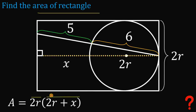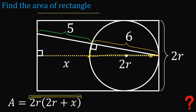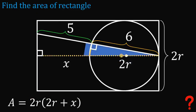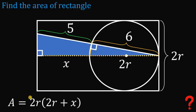We can now write the area as base times height: 2R multiplied by (2R plus X). To find the value of this expression, we'll create another right triangle by connecting two points. This gives us a 90-degree angle because the hypotenuse is the diameter of the circle. We can now see two similar triangles — the small right triangle and the big right triangle.